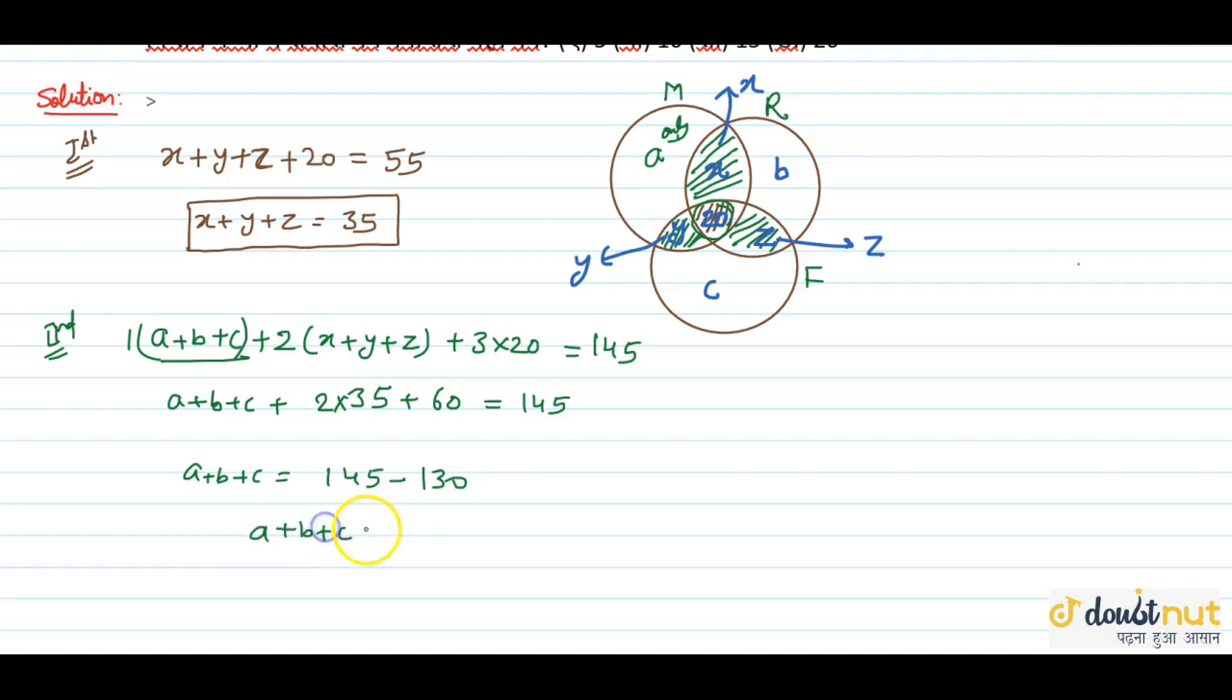So a plus b plus c equals 145 minus 70 minus 60, which is 145 minus 130. So a plus b plus c equals 15. This value is equal to 15.